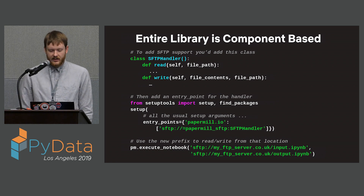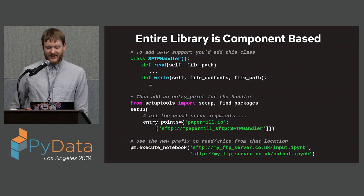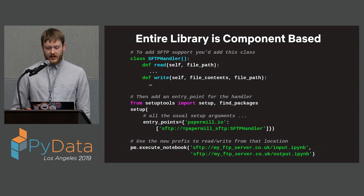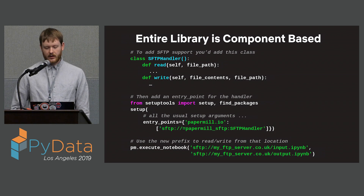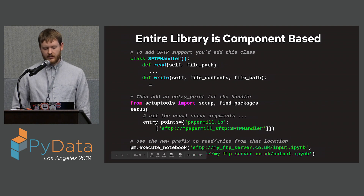Extending it is super easy. Let's say you wanted to add SFTP — this is all you need. You make your SFTP handler with a read function and a write function with that signature. In your own project, you don't have to do it in Papermill itself — you use entry points in setup tools, register the scheme on the left with the class name you're going to use for that scheme, and then you can use it inside anything that has that package installed. Now SFTP works for input and output.